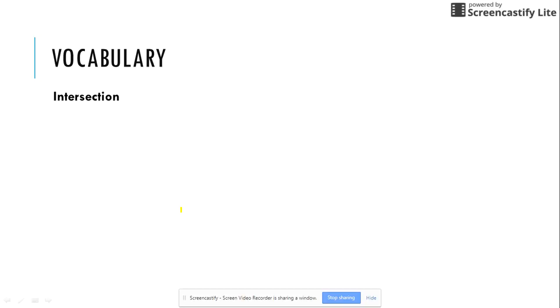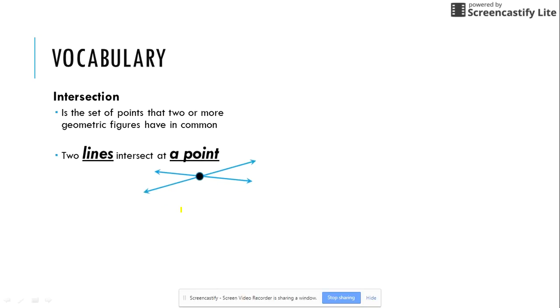Our final vocabulary term is intersection. An intersection is the set of points that two or more geometric figures have in common. If you think about an intersection when you are driving, two streets meet, there is usually a light or a stop sign. Two lines intersect at a point, always, every time. You need to make sure that you memorize this fact. Two planes intersect at a line, the red plane and the purple plane. They intersect at a line, right here.